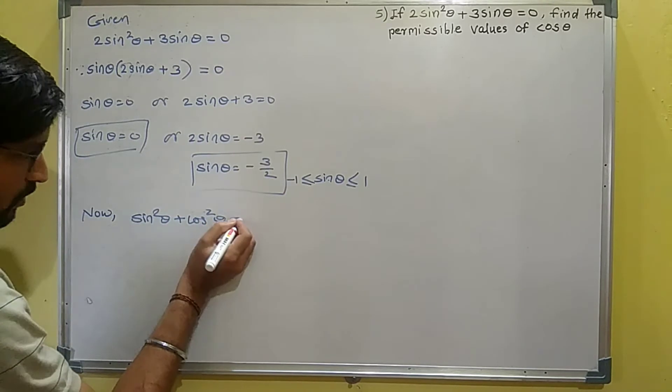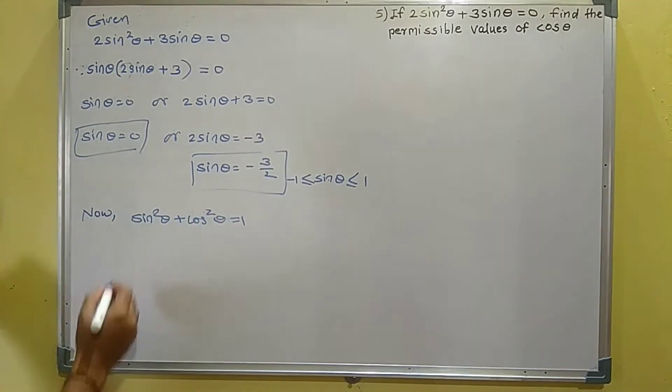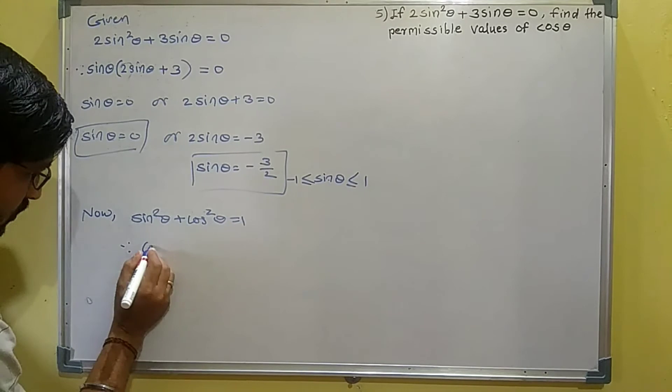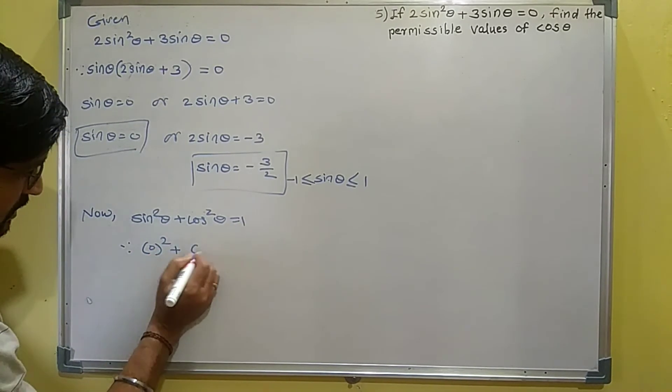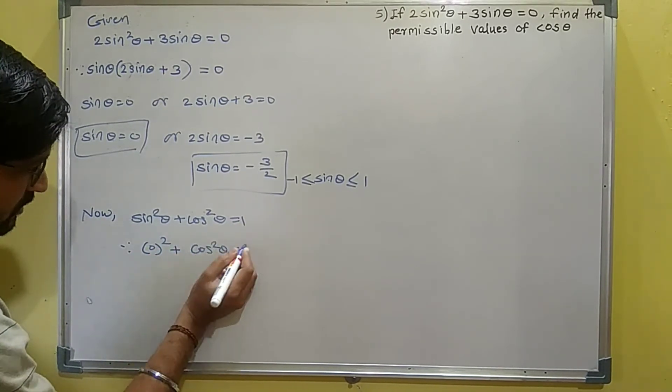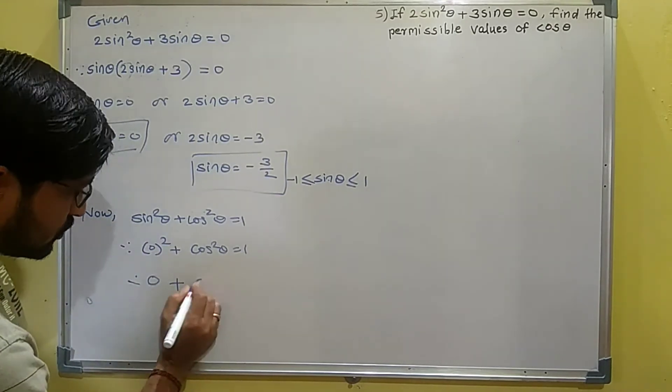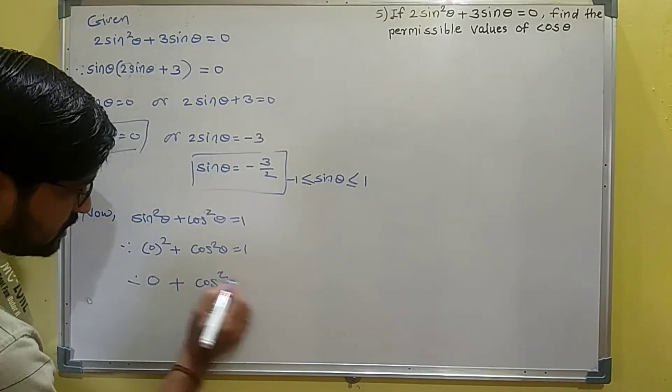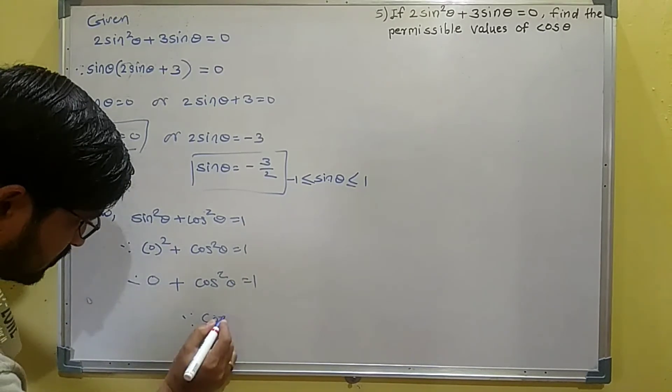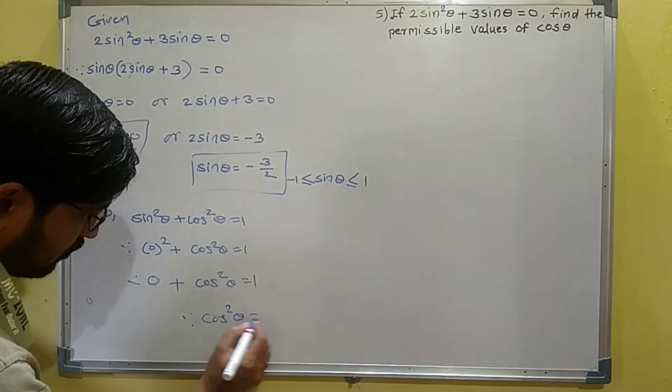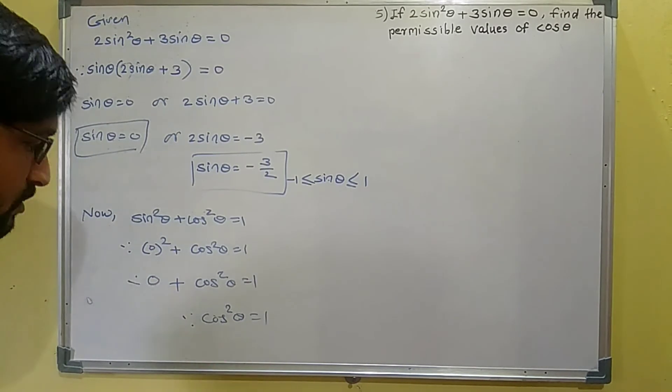Using the identity sin²θ + cos²θ = 1: substituting sinθ = 0 gives 0 + cos²θ = 1, so cos²θ = 1.